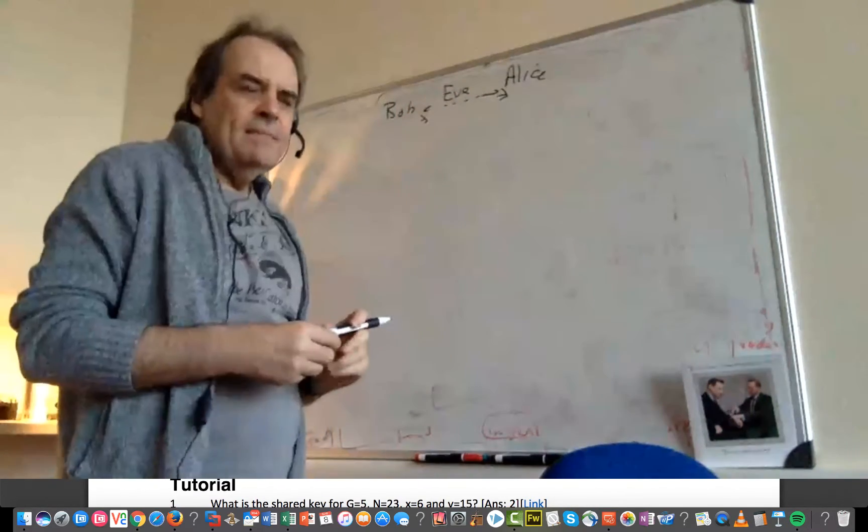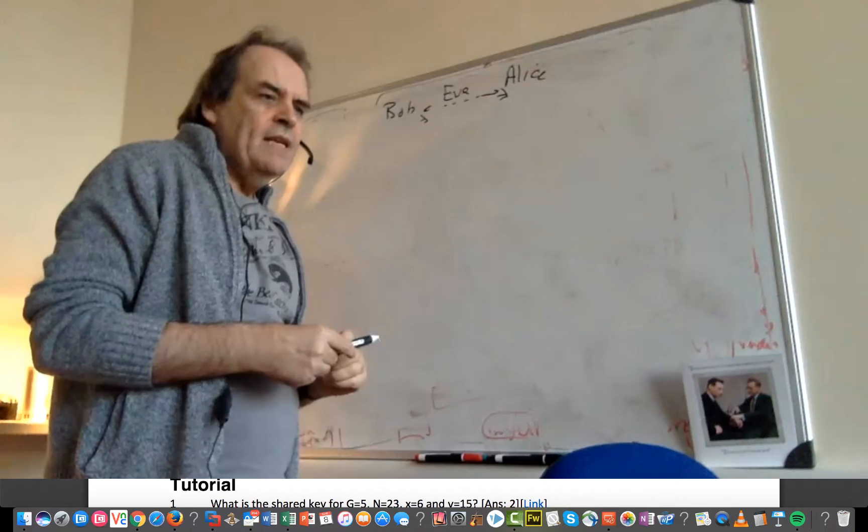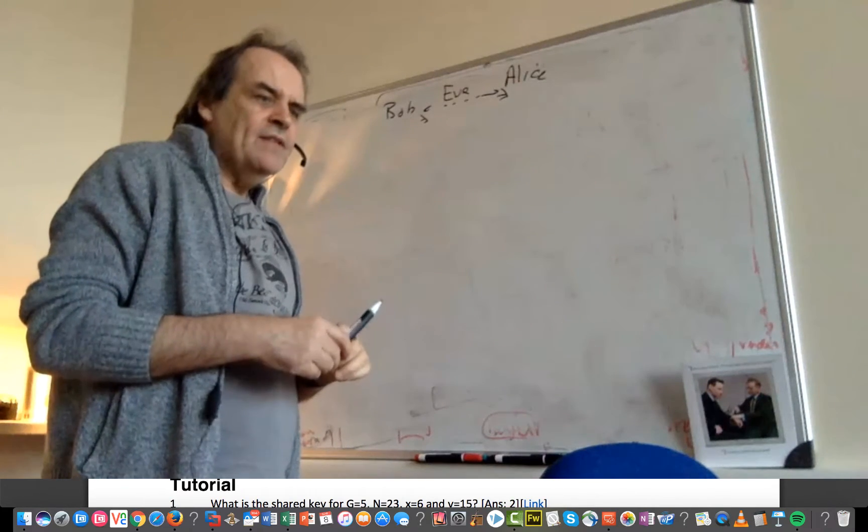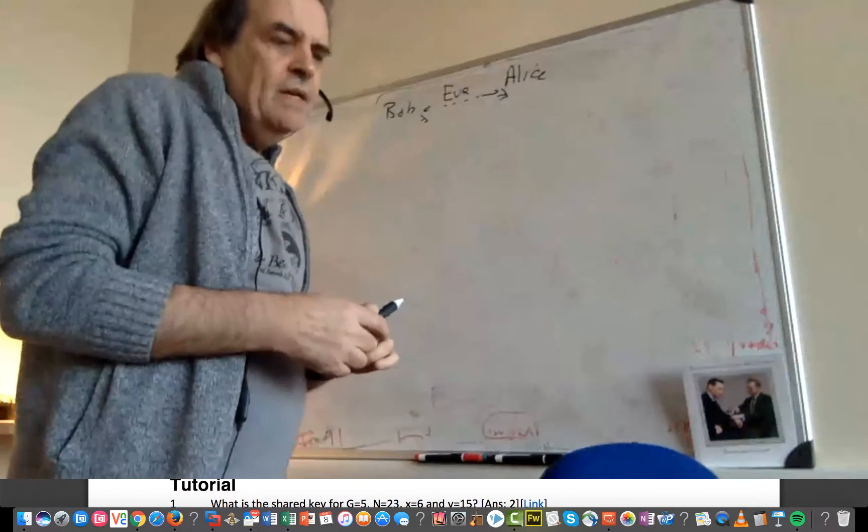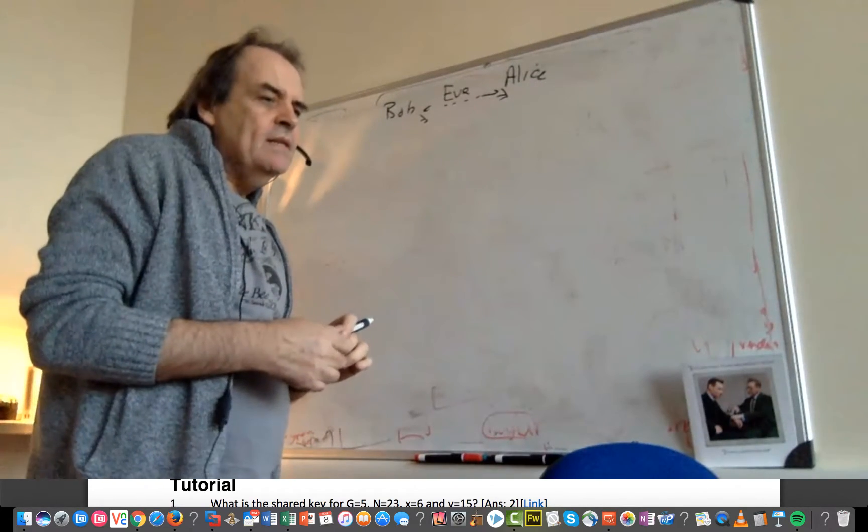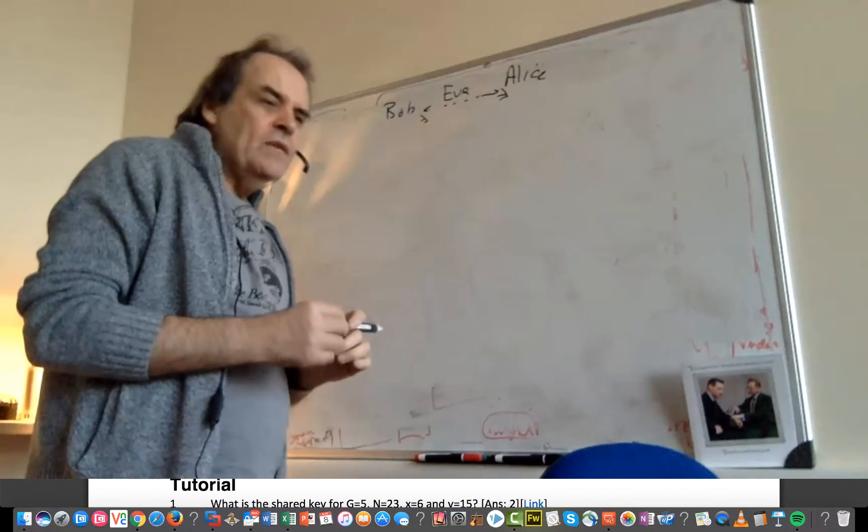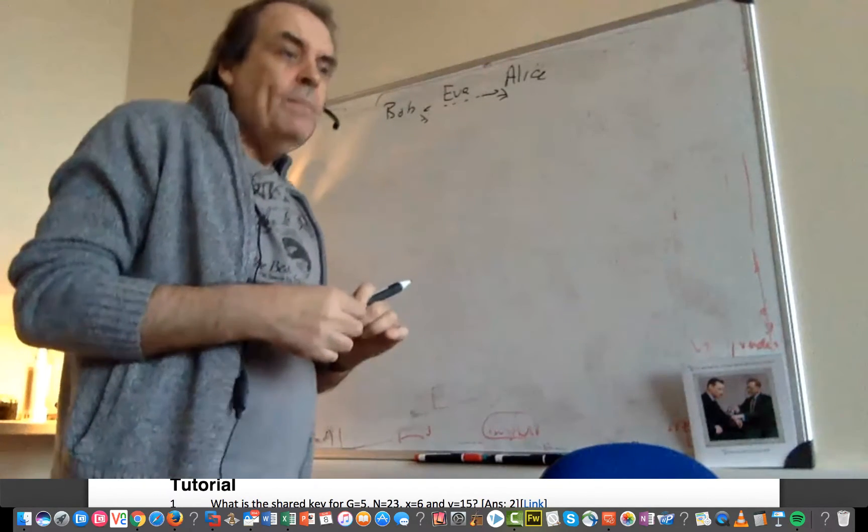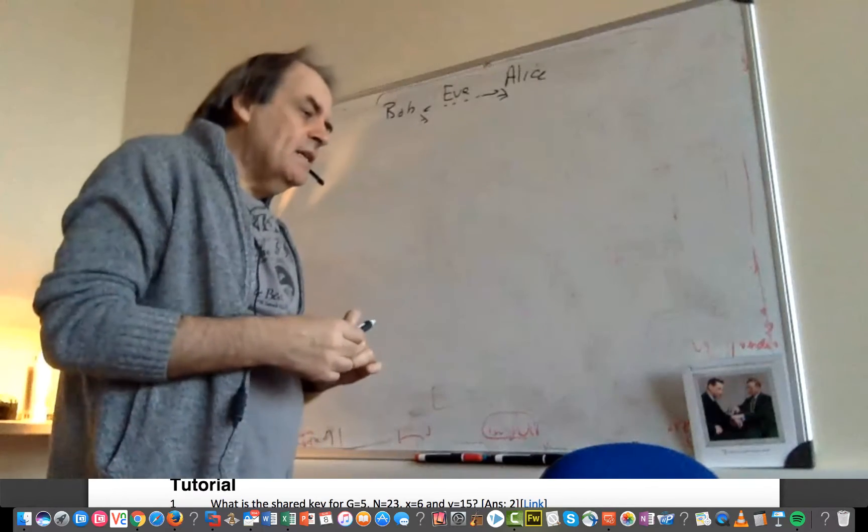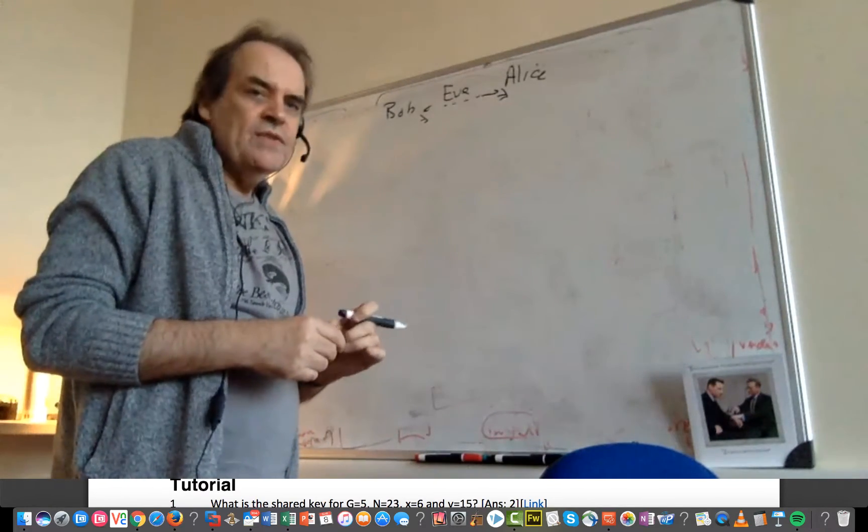Unfortunately, Eve is listening in the middle, and if Eve can pick off what Bob and Alice are saying, then she might be able to take a copy of the key. So it was Diffie and Hellman who came up with a method that allows us to pass values openly, and hopefully Eve won't be able to guess what the secret key actually is.